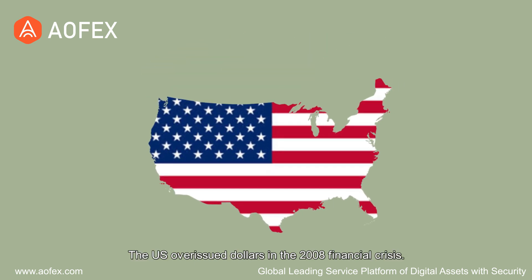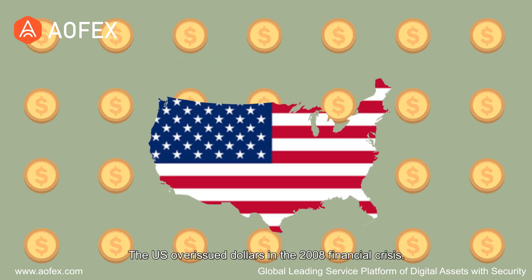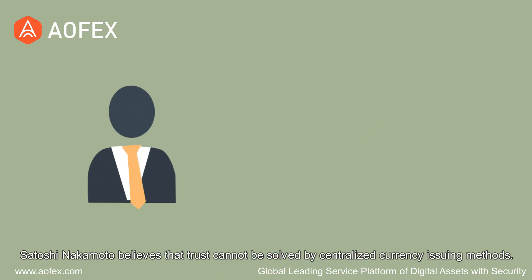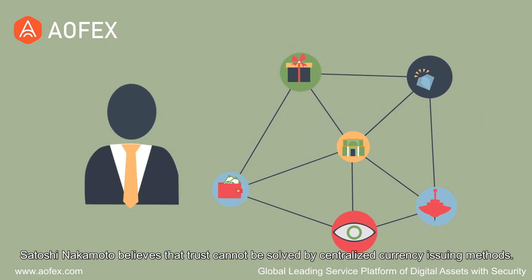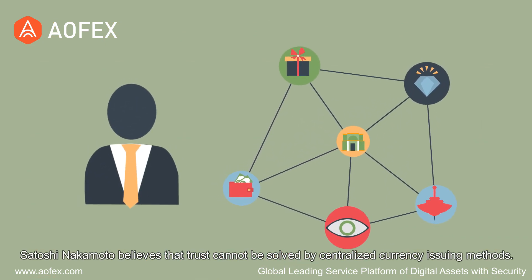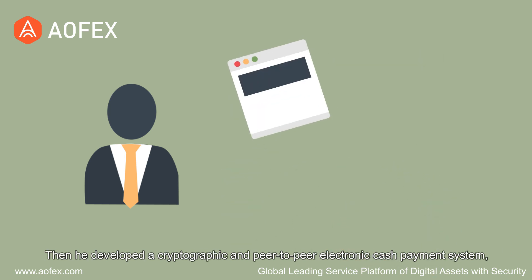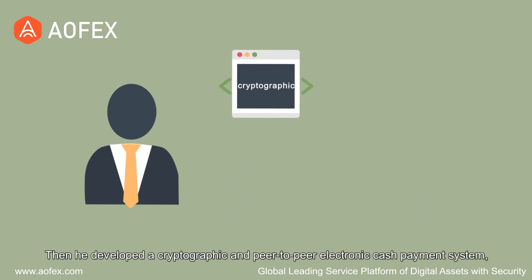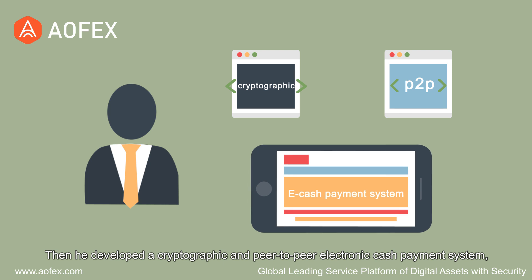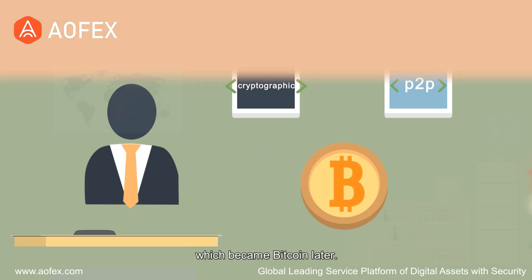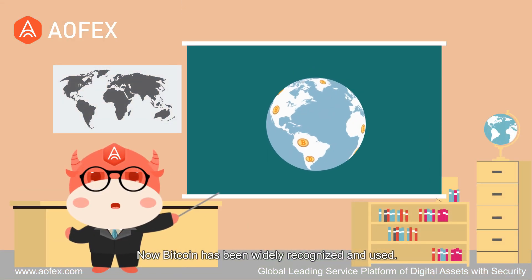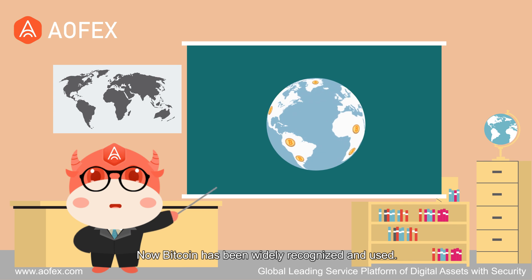The US overissued dollars in the 2008 financial crisis. Satoshi Nakamoto believes that trust cannot be solved by centralized currency issuing methods. Then he developed a cryptographic and peer-to-peer electronic cash payment system, which became Bitcoin later. Now Bitcoin has been widely recognized and used.